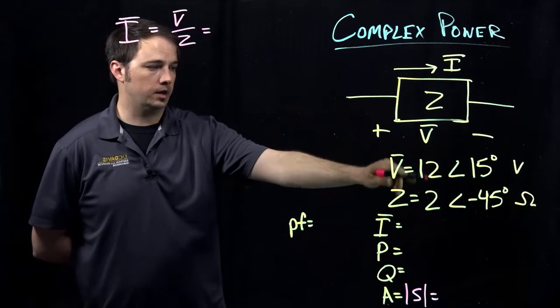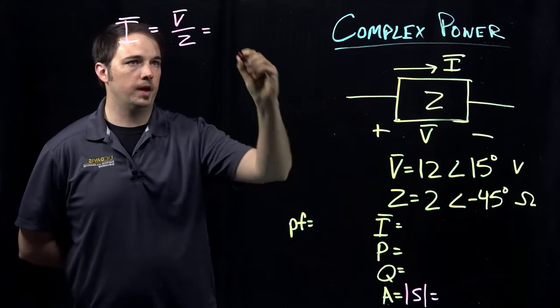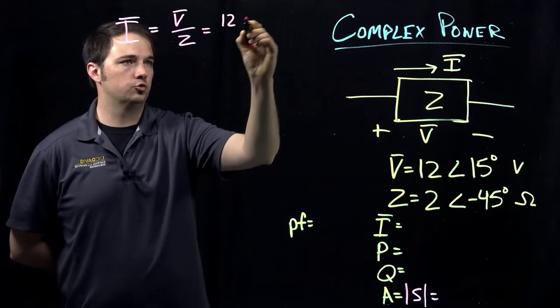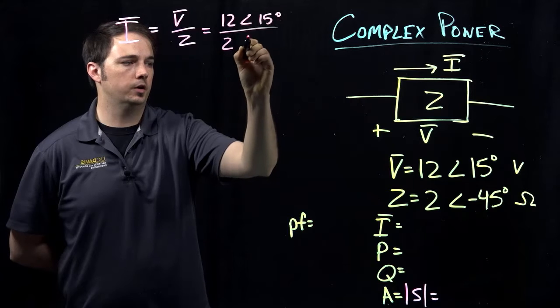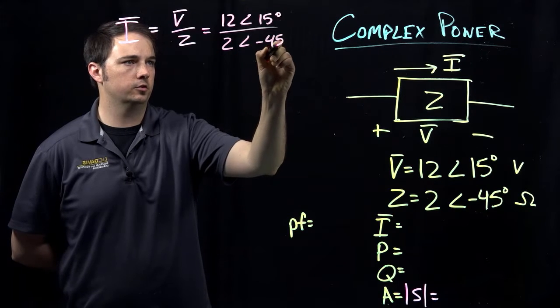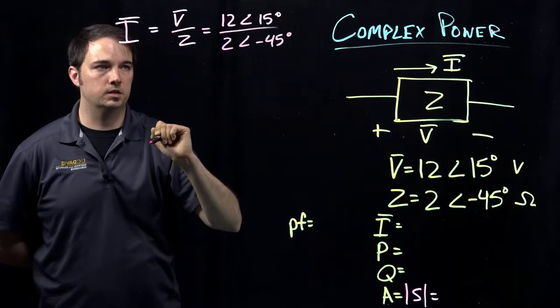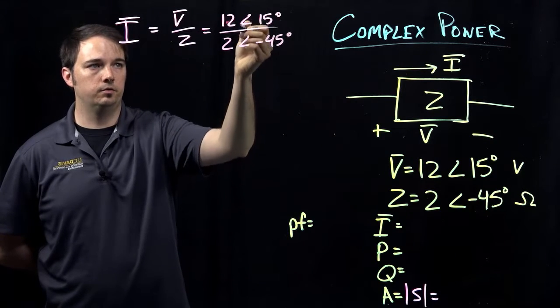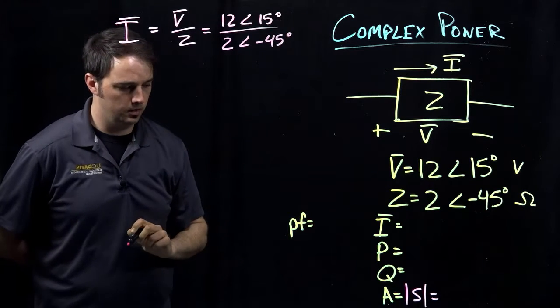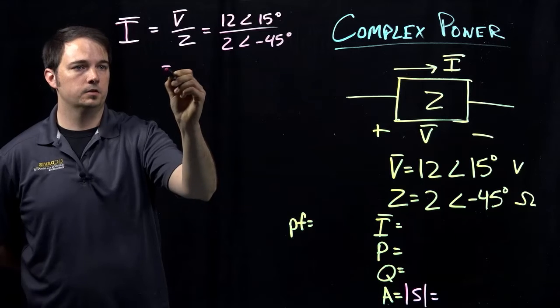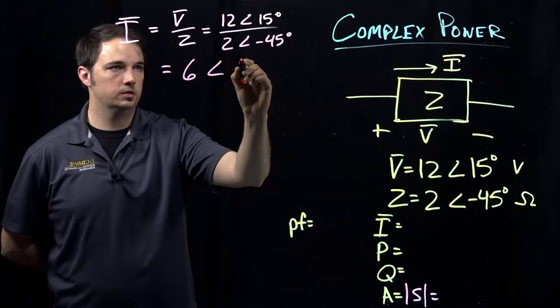And here, it's kind of helpful that both my voltage and my impedance are given in the polar form, that'll help us do the math a little bit. So here we would have 12 at an angle of 15 degrees divided by 2 at an angle of minus 45 degrees. Remember, if I'm dividing the polar form of these complex numbers, the only thing I have to do is really divide the magnitudes of these vector quantities and then subtract the angles that I have here.